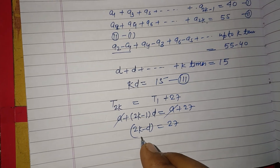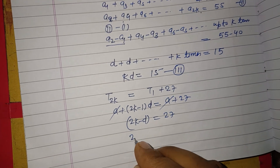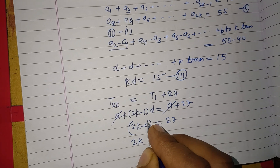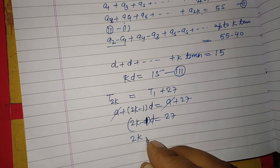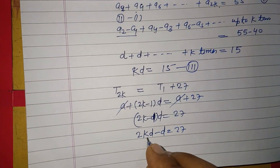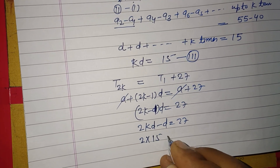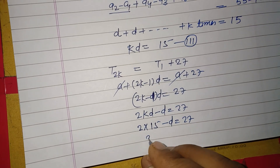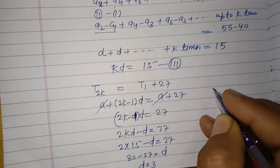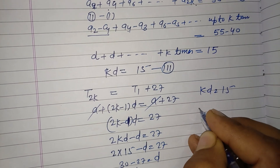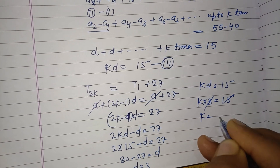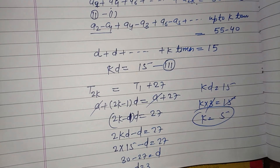Expanding: 2kd - d = 27. Since kd = 15 from equation three, substituting gives 2(15) - d = 27, so 30 - d = 27, therefore d = 3. Then from kd = 15, we get k × 3 = 15, so k = 5.